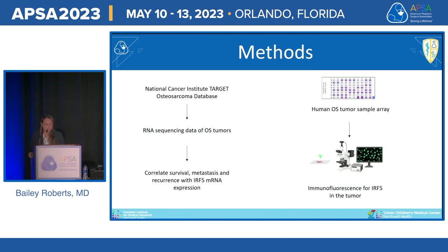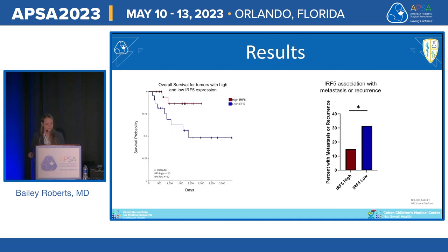To corroborate these findings in human samples, we used the National Cancer Institute TARGET database, which includes adolescent and pediatric tumors from the Children's Oncology Group at various hospitals. RNA sequencing was correlated with survival, metastasis, and recurrence relative to IRF-5 mRNA expression. We also used a human osteosarcoma tumor tissue array with immunofluorescent staining for IRF-5. Overall survival was significantly better in patients in the highest quartile of IRF-5 expression compared to the lowest quartile. Higher IRF-5 levels correlated with lower metastasis and recurrence, indicating a protective effect.